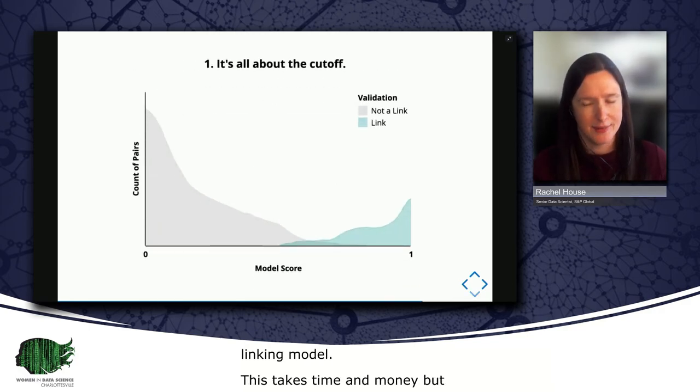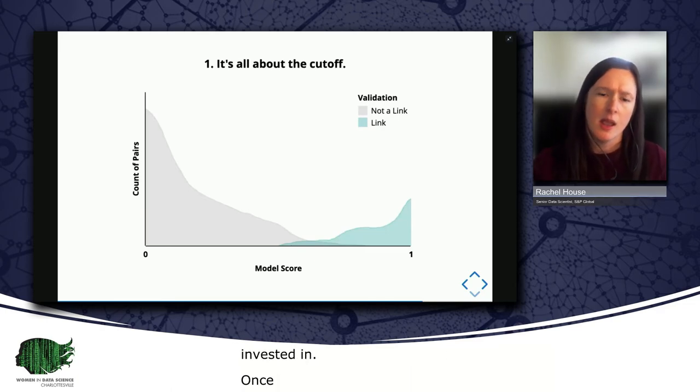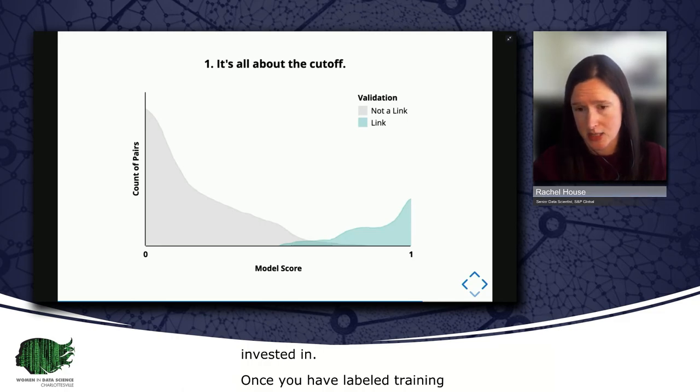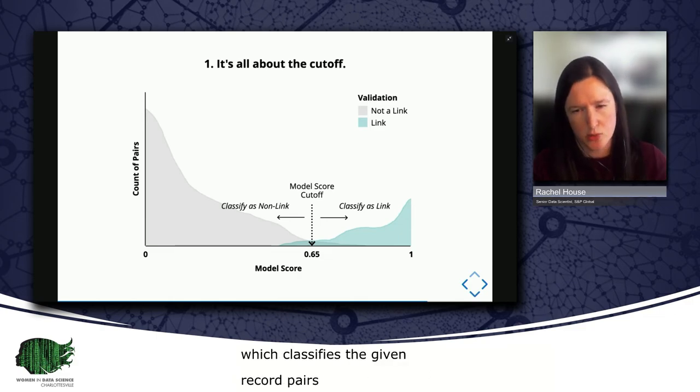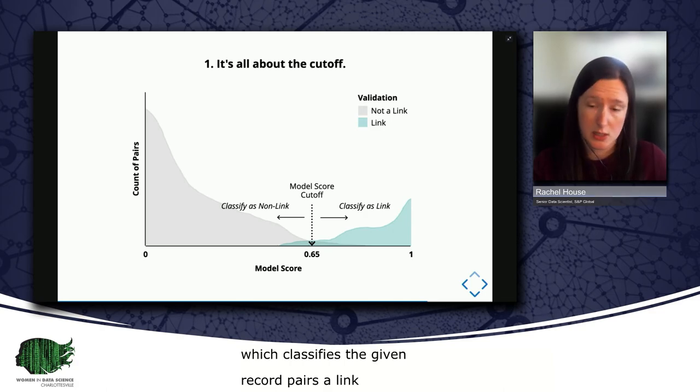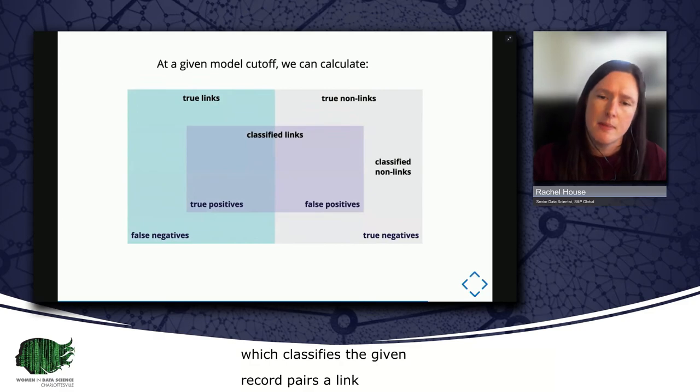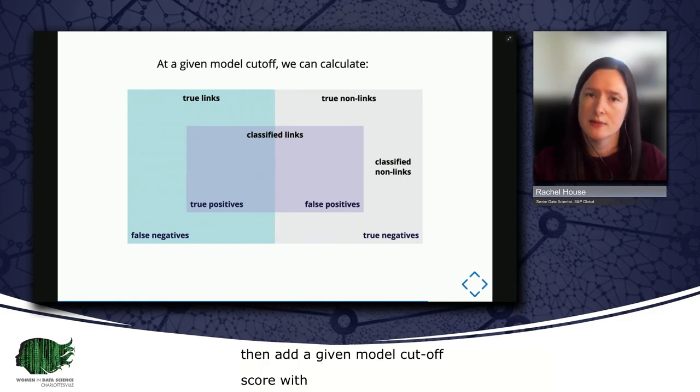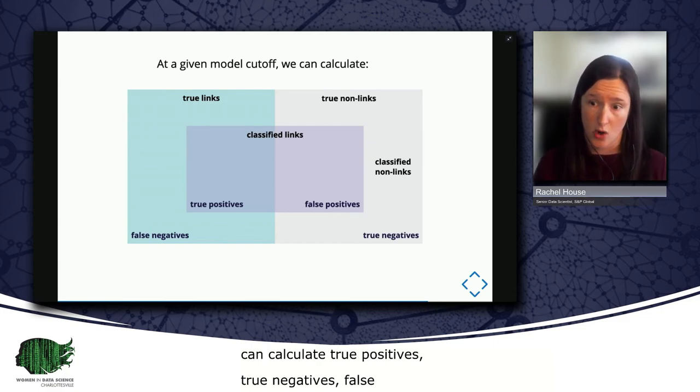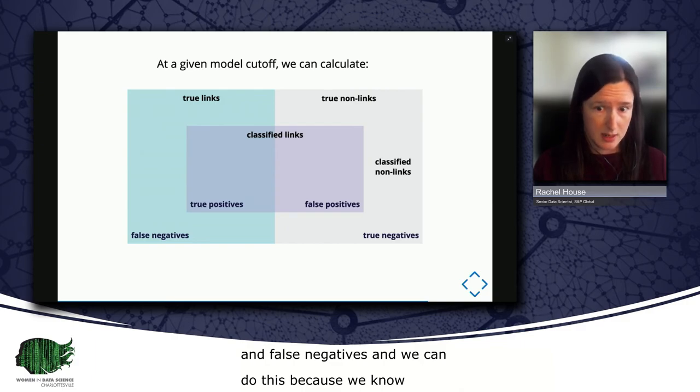Right. Once you have labeled training data, you're able to evaluate linking performance. You'll recall that it is the similarity score generated by the classification step along with a threshold or cutoff, which classifies the given record pair as a link or not a link. Thus, one of the most important decisions you will make during evaluation is where to set that cutoff. And here, when you see model cutoff, we're referring to the classification approach, which is usually some sort of model. If a given model cutoff score determines which pairs get classified as links or not links, then at a given model cutoff score with validated pairs, we can calculate true positives, true negatives, false positives, and false negatives. We can do this because we know what the true links are and whether they've been classified by the model as links or non-links, and we know what the true non-links are and whether they've been classified by the model as links or non-links.